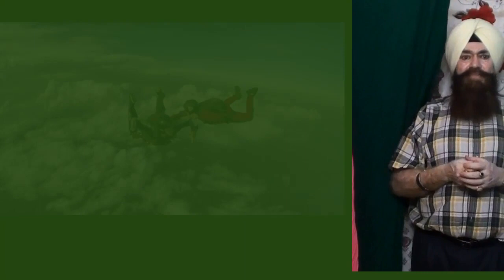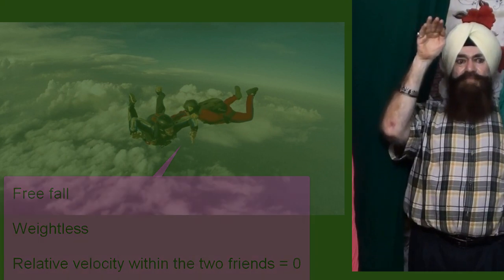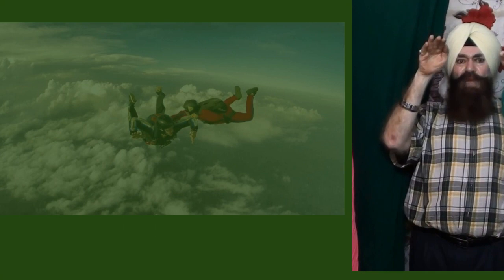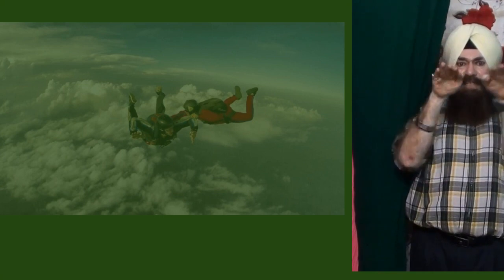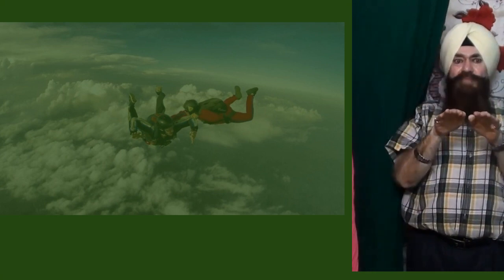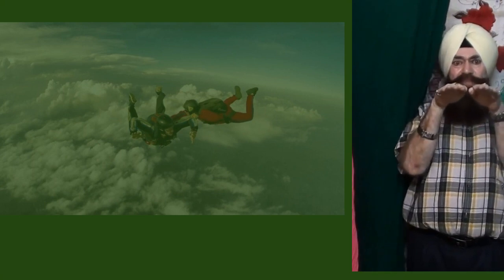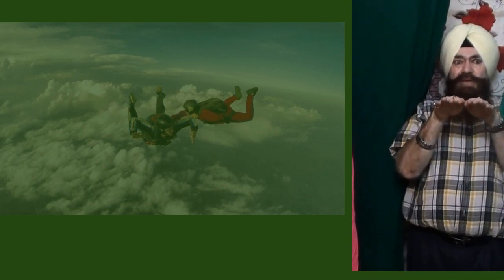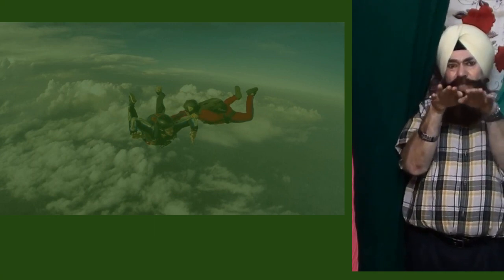If I go skydiving with my friend and we jump from the plane at the same spot, then neglecting air friction, we will be moving at a constant velocity relative to one another. We will both be in free fall, and our relative velocity with respect to one another will be zero. So in that case, my frame and my friend's frame will be inertial with respect to one another.